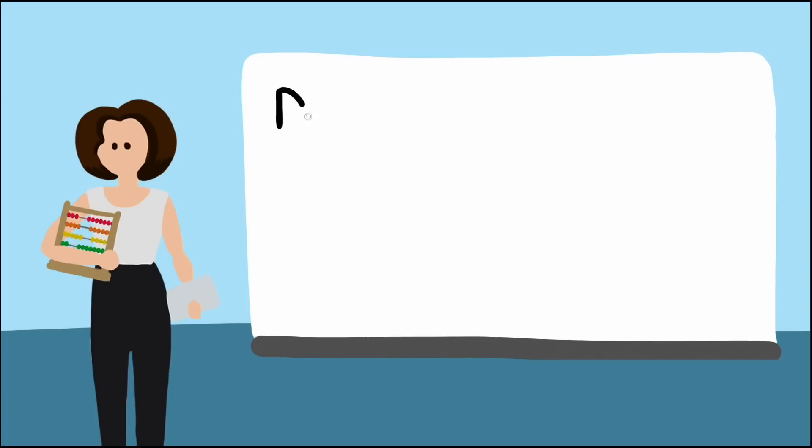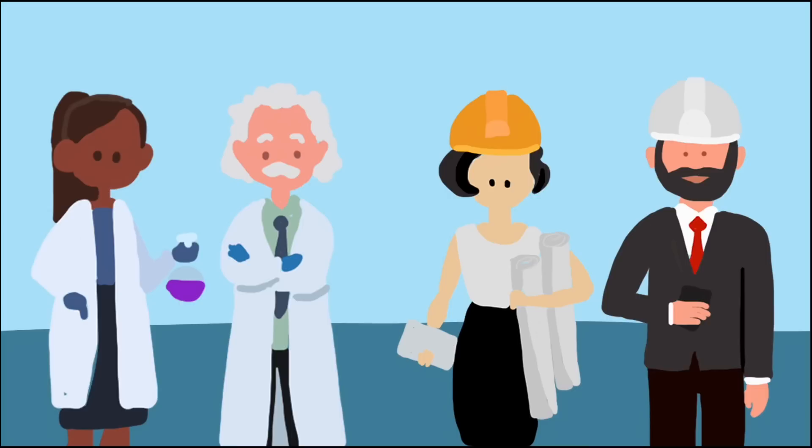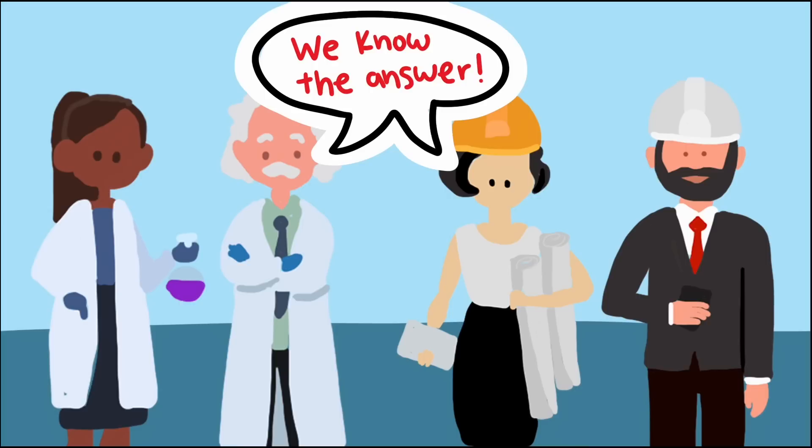So why does this matter? Because if you've had a calculus class, you're probably taught to think about derivatives like a mathematician, not like a scientist or engineer. And if you can't think about derivatives like a scientist or engineer, then it will be harder for you to recognize and use derivatives in real-world situations.